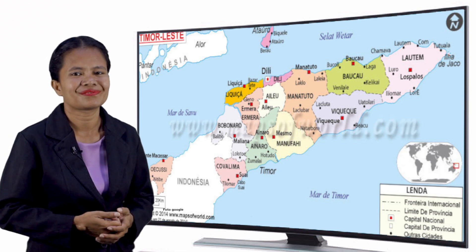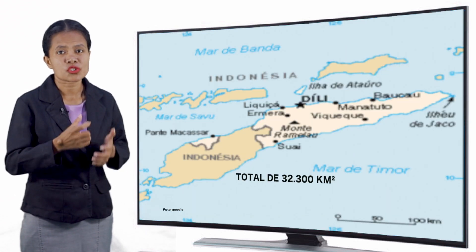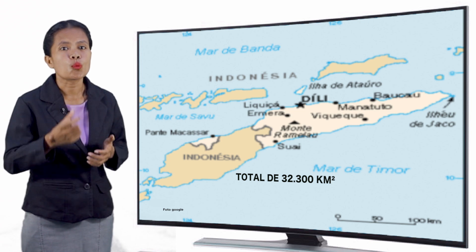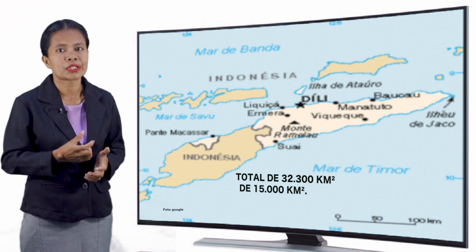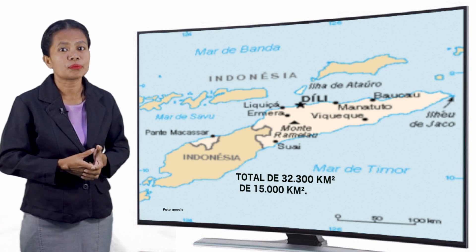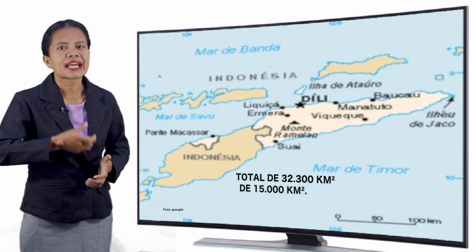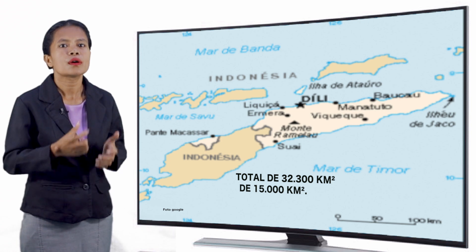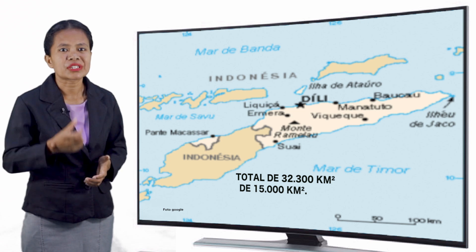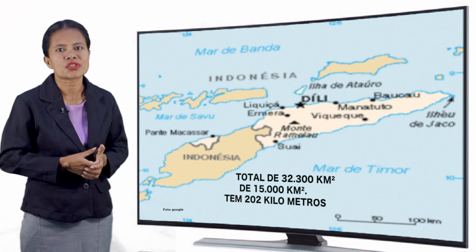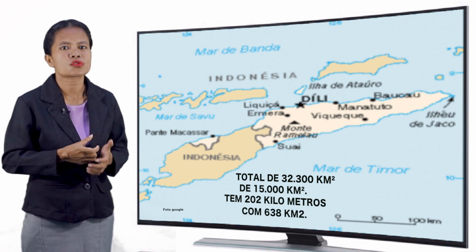And the enclave of Oekusi Ambeno. The Ilha of Timor has a total of 32,300 km², with Timor-Leste occupying an area of about 15,000 km². It is bathed in the south by the Timor Sea, which separates it from Australia, to the northwest by the Mar of Sao, separated from the islands of Tsumba, Flores and Solor, and to the north by the Mar of Wettar. The terrestrial border with Indonesia is 202 km and the coast is 638 km.